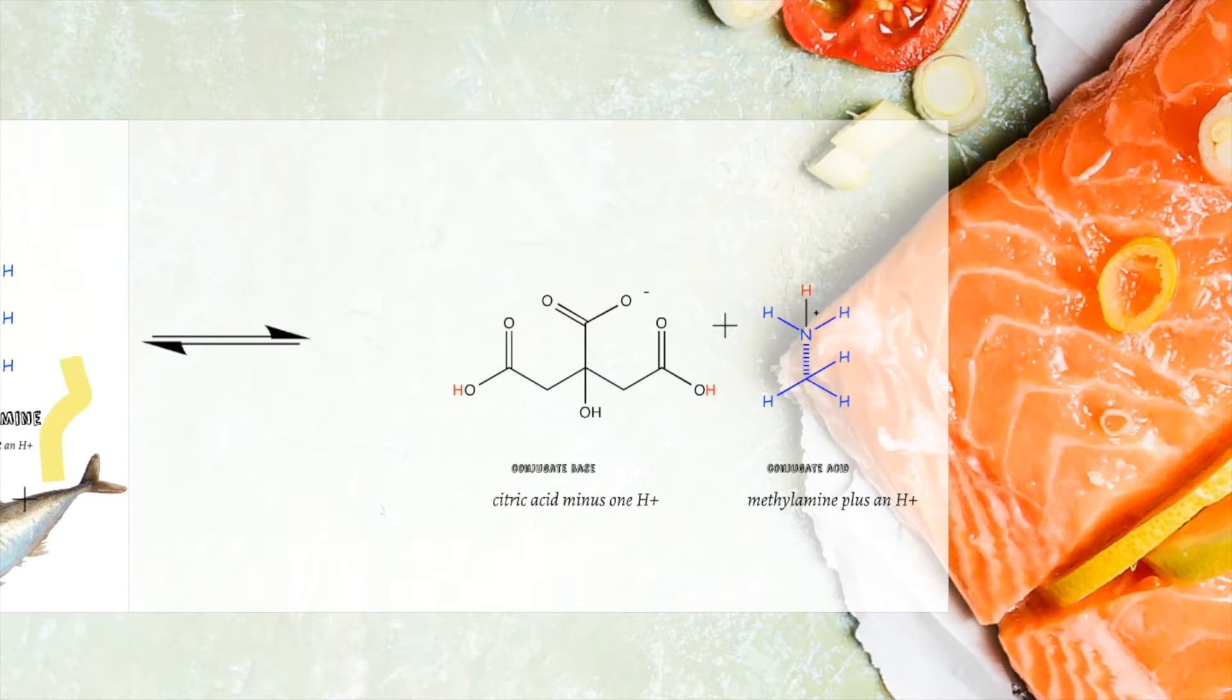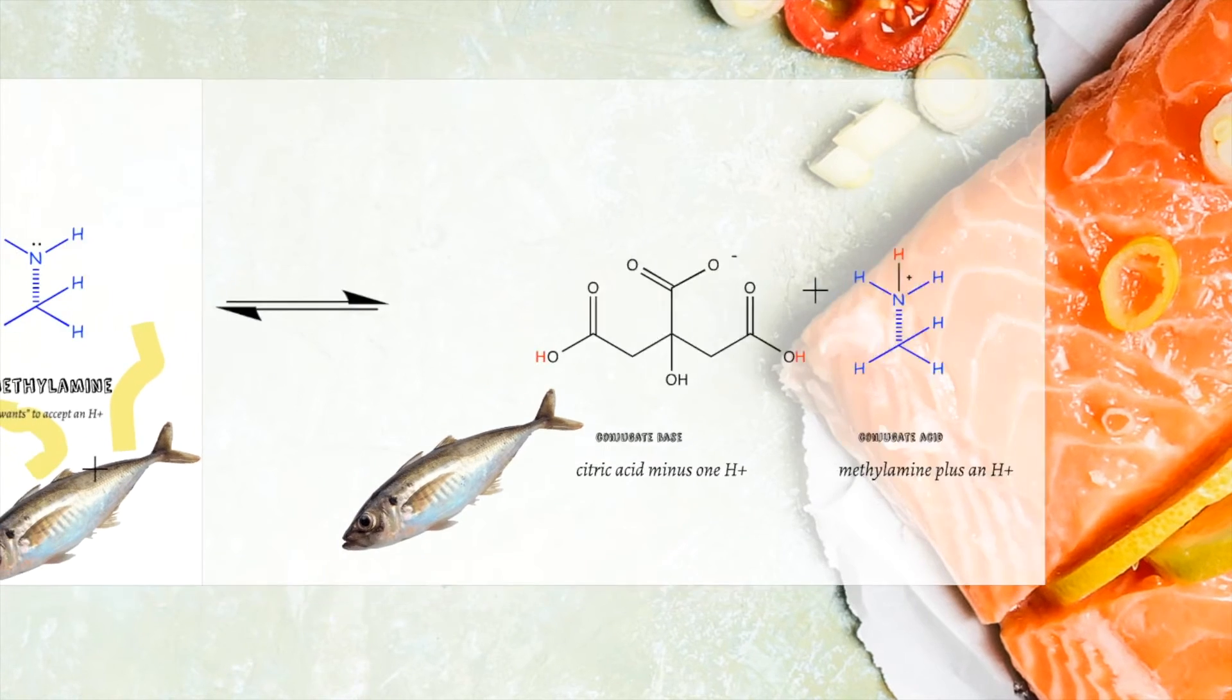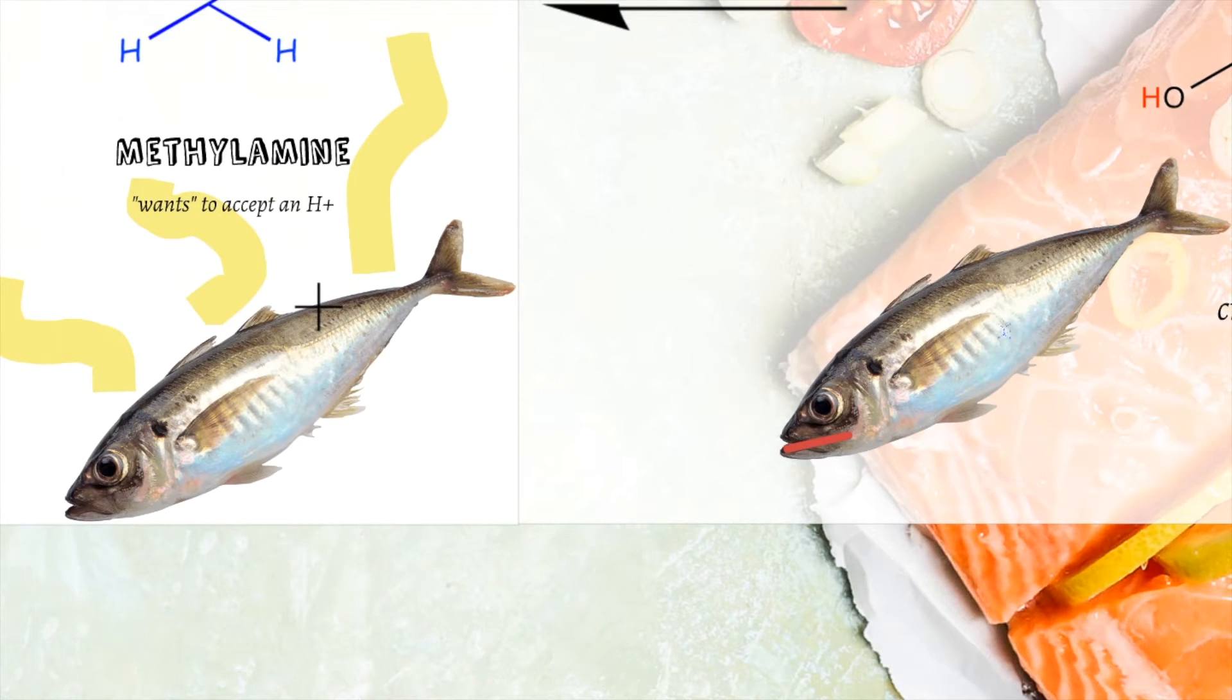This reaction is the reason that you squeeze lemon juice onto fish. When methylamine becomes its conjugate acid, the methylammonium cation, it exists mostly in the liquid rather than the gas form. This means it is much, much harder to smell.